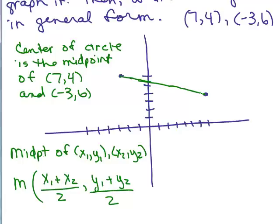What's the number in between (-3) and 7? It's the average. So that's all this is. It's the average of the x's and the average of the y's. So let's figure that out for this problem.